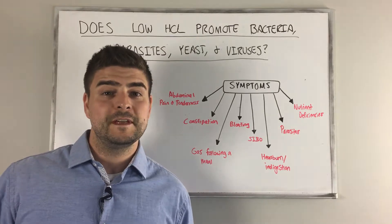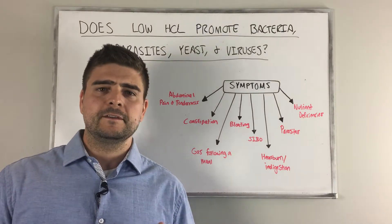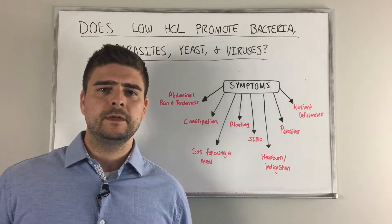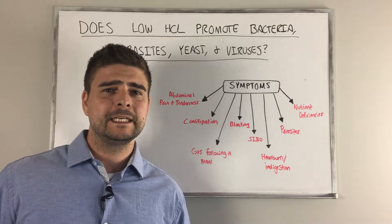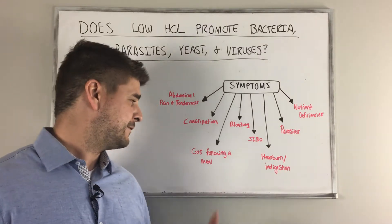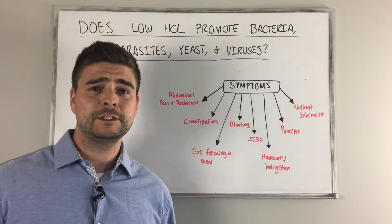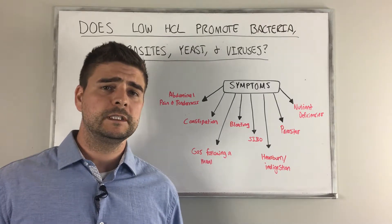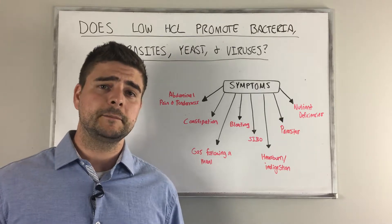So what are the symptoms of low stomach acid? You can have things like abdominal tenderness and pain, you can have bloating, you can have SIBO, you can have parasites, you can have indigestion or heartburn, you can have gas following a meal, you can have nutrient deficiencies, constipation. There's a whole host of symptoms and signs that would relate to low stomach acid.